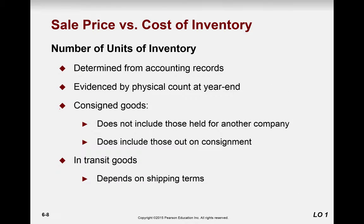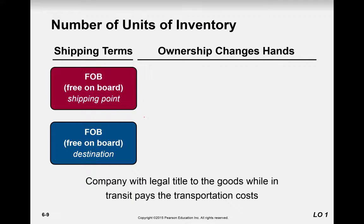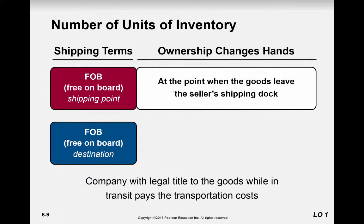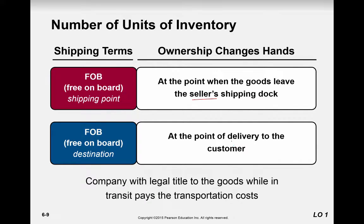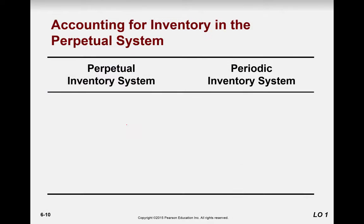The number of units in inventory is determined by physically counting them. Consigned goods are not included in inventory — if you move your inventory to someone else's location for them to sell it, it is still your inventory. You only record it when it is sold. Regarding shipping terms: FOB shipping point means the seller records revenue and the reduction of inventory when they ship. FOB destination means the seller records those when the customer takes delivery.